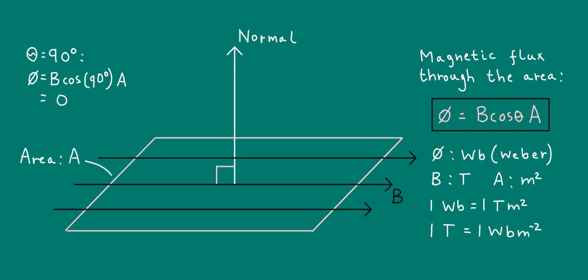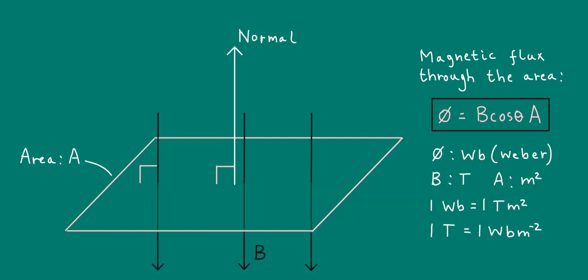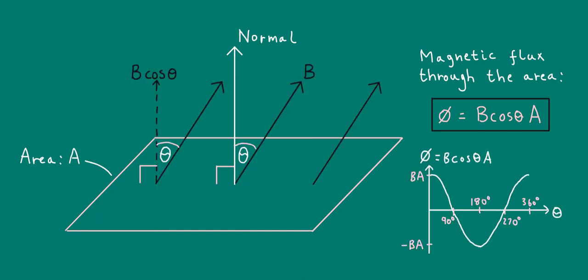What if the field lines point in the direction opposite to the normal? In that case, the angle between the field lines and the normal is 180 degrees. So the magnetic flux through the area is equal to minus BA, since cosine 180 is equal to minus one. So magnetic flux can be negative as well. And it's useful to see how the flux varies with angle in this graph. As you can see, we're just looking at a cosine-shaped graph. Notice that the magnetic flux is negative when the angle theta is greater than 90 and less than 270 degrees, i.e. when the vertical component of the flux density is pointing in the direction opposite to the normal.